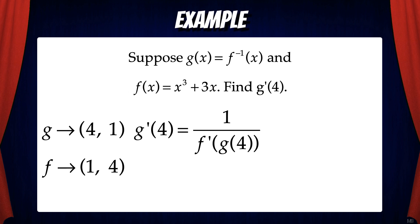And this gives us 1 over f prime of g of 4. But g of 4 equals 1. So g prime of 4 equals 1 over f prime of 1.